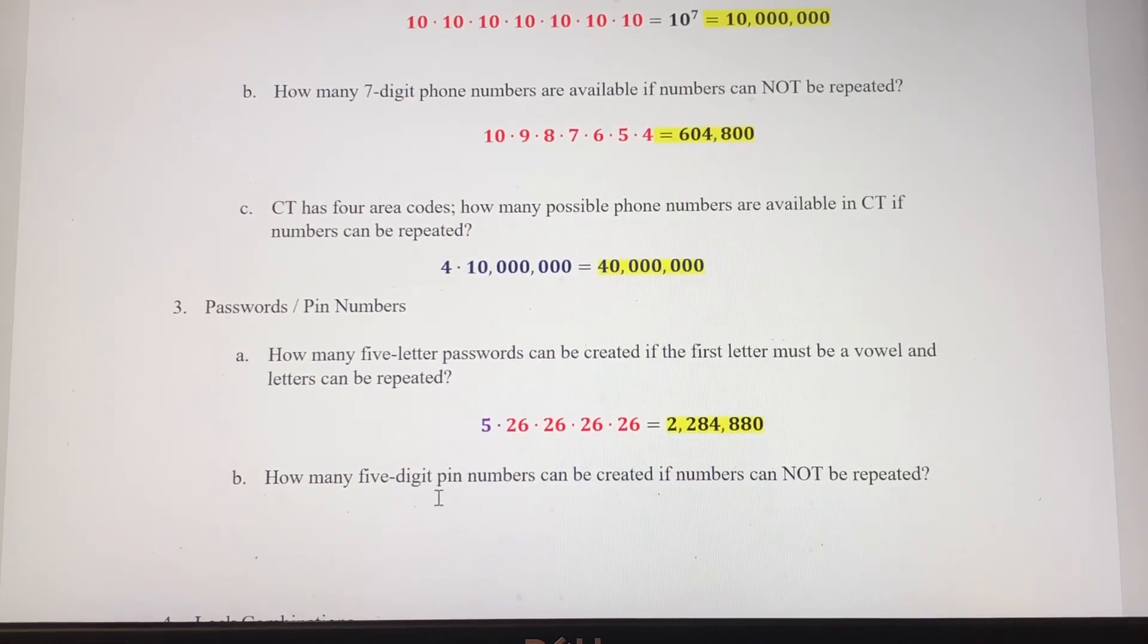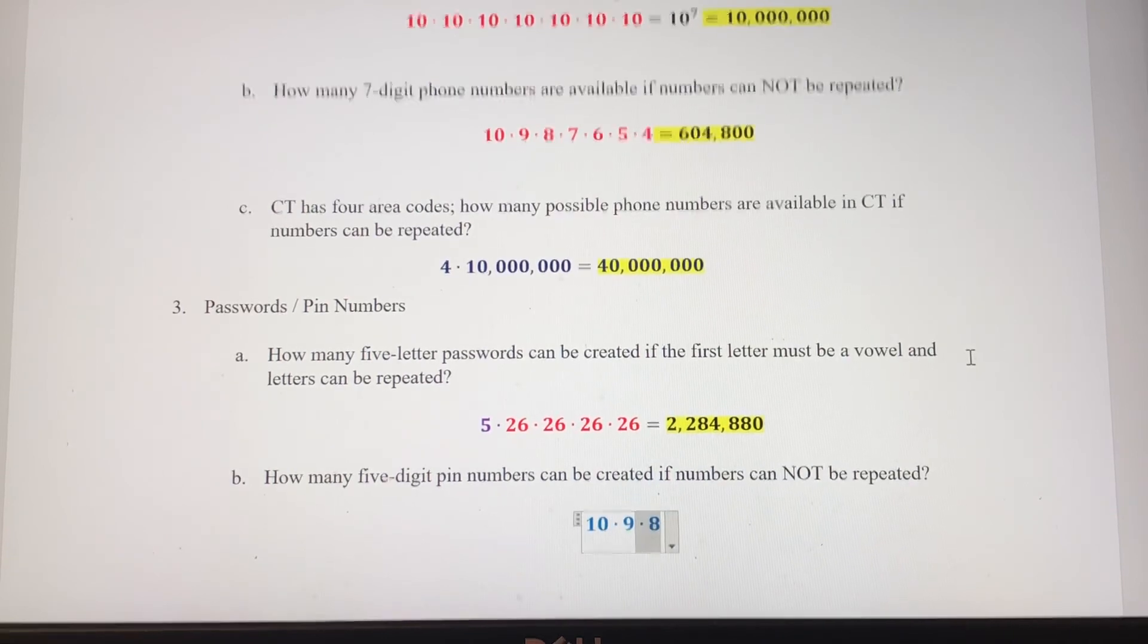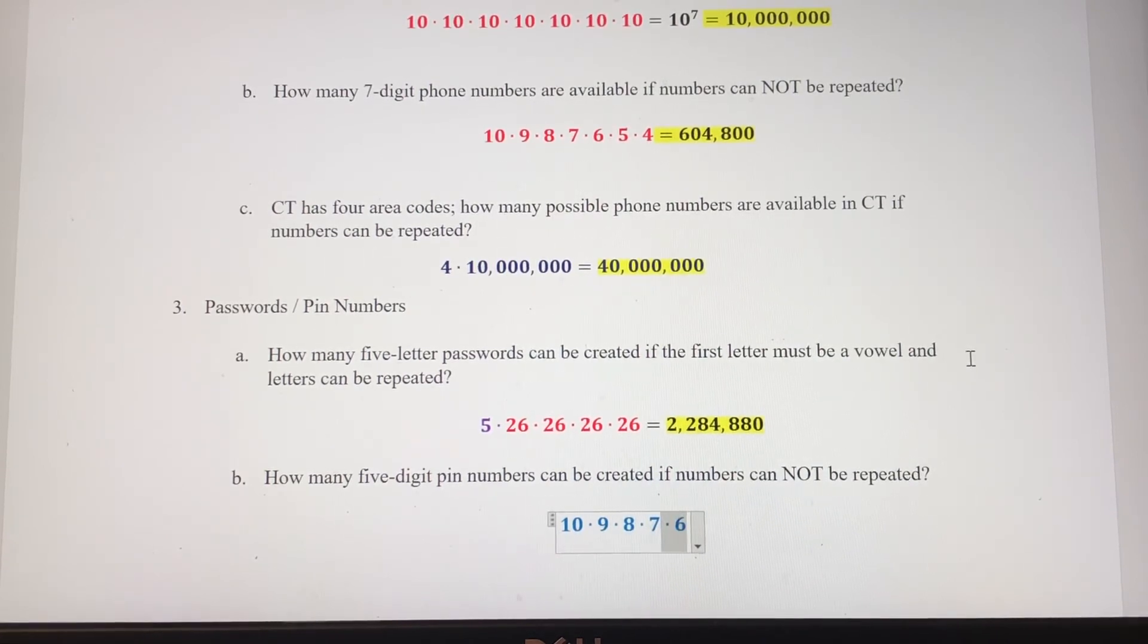How many five-digit PIN numbers can be created if numbers cannot be repeated? So that goes up. It's kind of like the phone number problem in part B here. We're going to have 10 times 9 times 8 times 7 times 6, which gives us 30,240 possible PIN numbers.